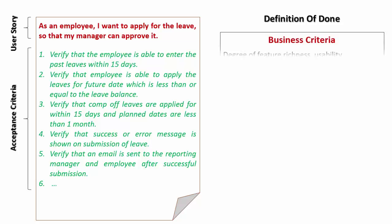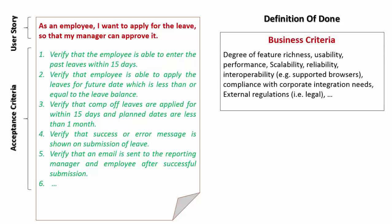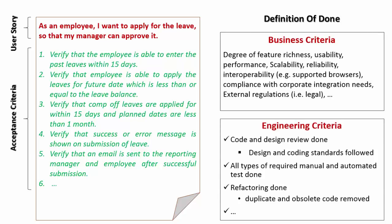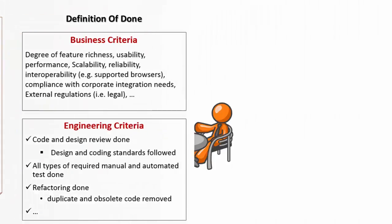Apart from your criteria — the business criteria — we add our own internal process checklist. For example, is it reviewed, tested for quality, etc. All this forms the engineering definition of done. We say a requirement is complete only when both the business definition of done and our engineering definition of done are met.